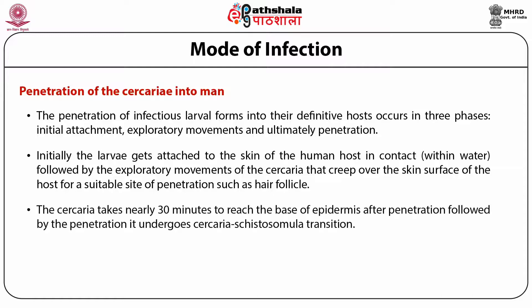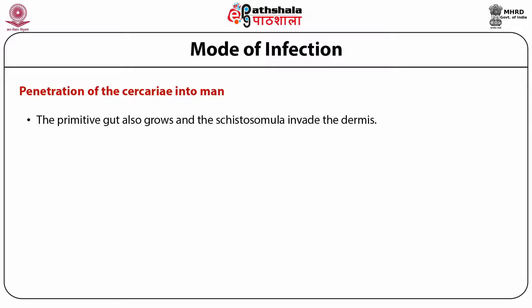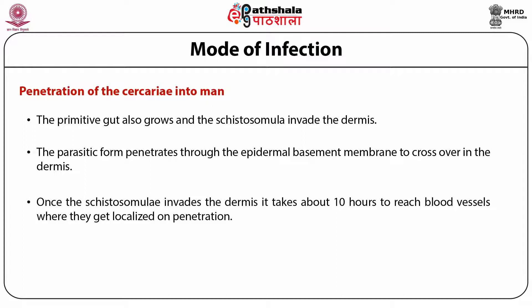The cercaria takes nearly 30 minutes to reach the base of the epidermis after penetration, followed by the cercaria-to-schistosomula transition. After transformation into schistosomulum, the larva loses its tail, and the tegument's trilaminate plasma membrane along with the sugar layer glycocalyx is substituted by the mature form of the tegument. The primitive gut also grows and the schistosomula invade the dermis, penetrating through the epidermal basement membrane to cross over into the dermis.